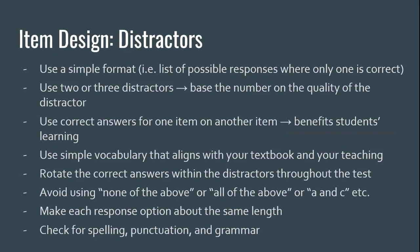When looking at distractors and response options, there should be definitely only one correct answer. Research on the number of distractors suggests usually two or three, but you should base the number on the quality of the distractors. Each distractor should be just as plausible as the next. If a distractor is completely irrelevant — maybe it's meant as a joke — it's not serving a purpose, it's not contributing to item quality, and it may throw some students off.